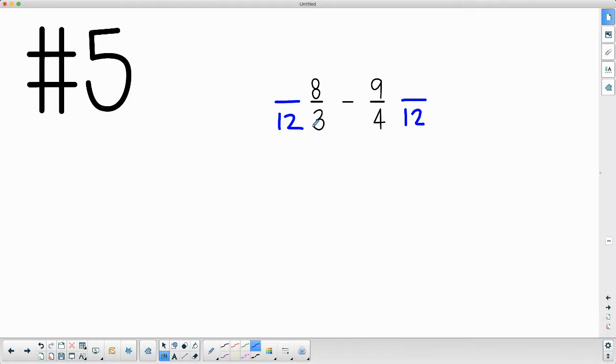So then to go here, we're going to do 3 times 9 is 27, and 4 times 8 is 32. So now I can subtract my numerators, and my denominator stays the same. And then make sure you do any simplifying if necessary.